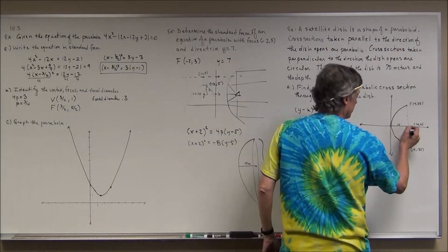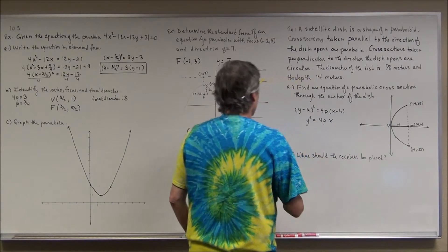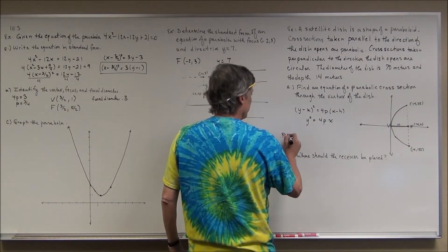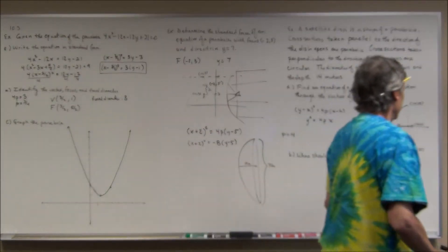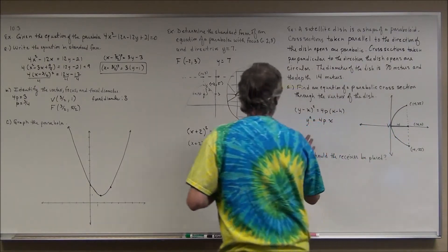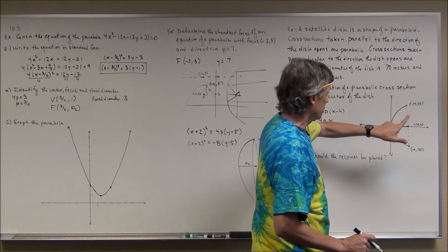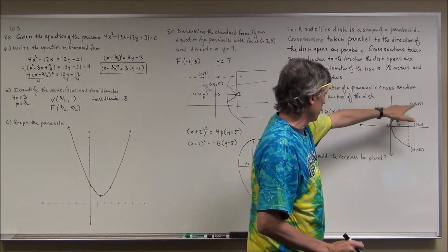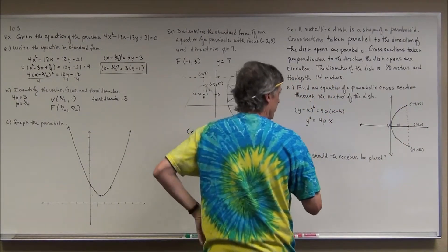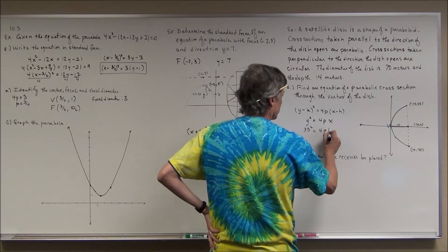At first I thought p might equal 14, the distance to the back of the dish, but I can't assume that's the focus. Instead, I'll use the known point (14, 35) that lies on the curve and plug it into y² equals 4px to solve for p.